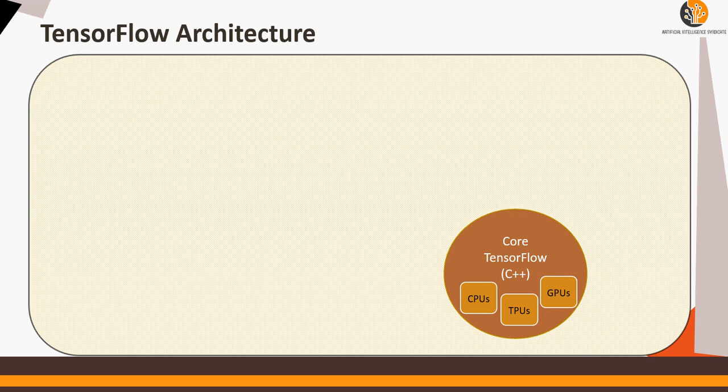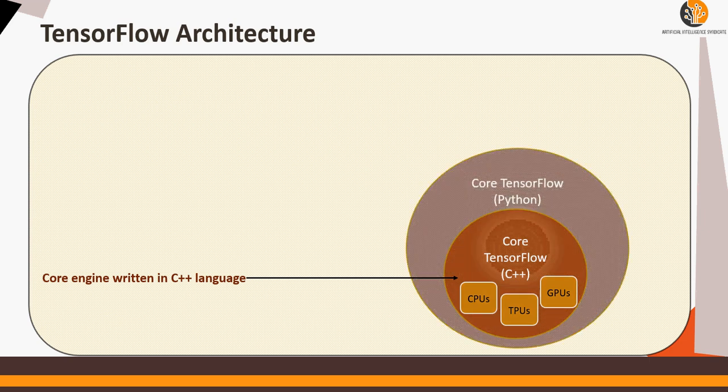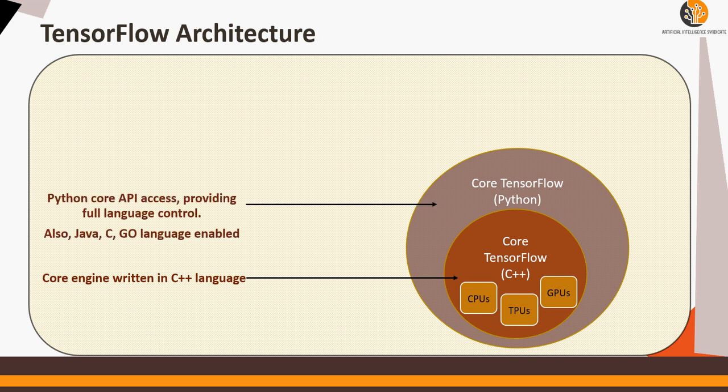TensorFlow supports TPUs, GPUs, CPUs processing, which is distributed processing in order to train and run deep neural networks. The core engine is written in C++ language and then it has Python as a wrapper which helps to write Python code on top of this core TensorFlow. Other languages which are also supported are Java, C, Go language, but for this introduction video we're going to focus on Python.